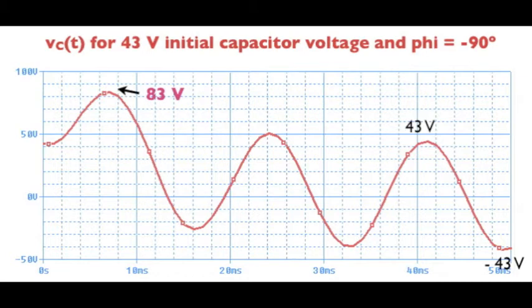Well, what if the capacitor had an initial voltage? Suppose the switch had been turned off and then really quickly turned back on again before the capacitor had time to significantly discharge. Specifically, let's look at the case where the capacitor voltage was 43 volts, the switch was closed at a time corresponding to phi equal minus 90 degrees on the AC waveform. Here's the result.